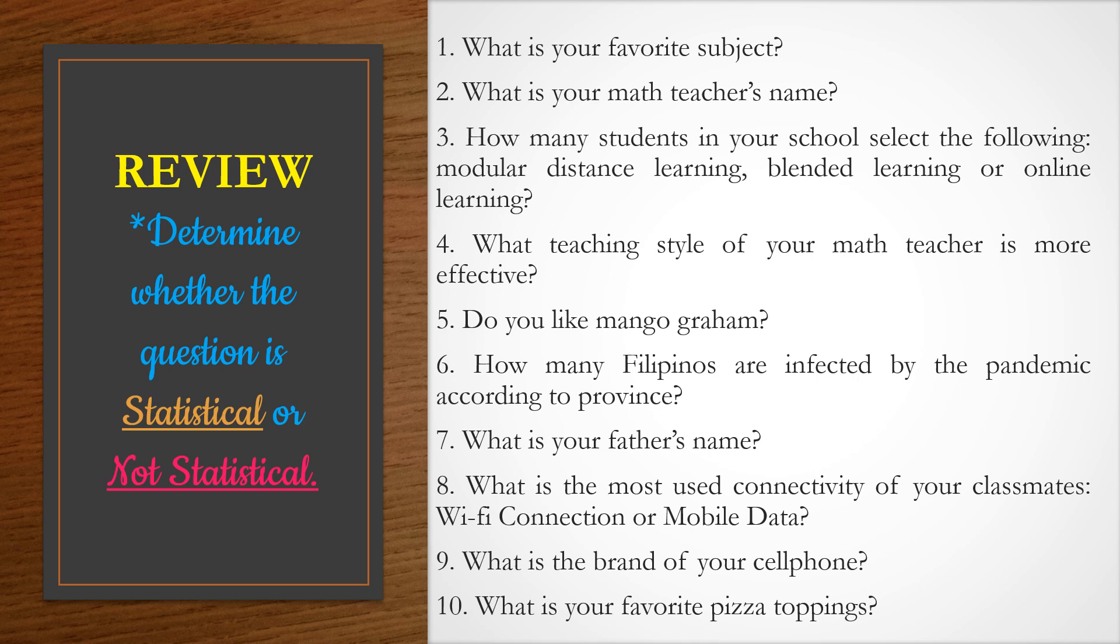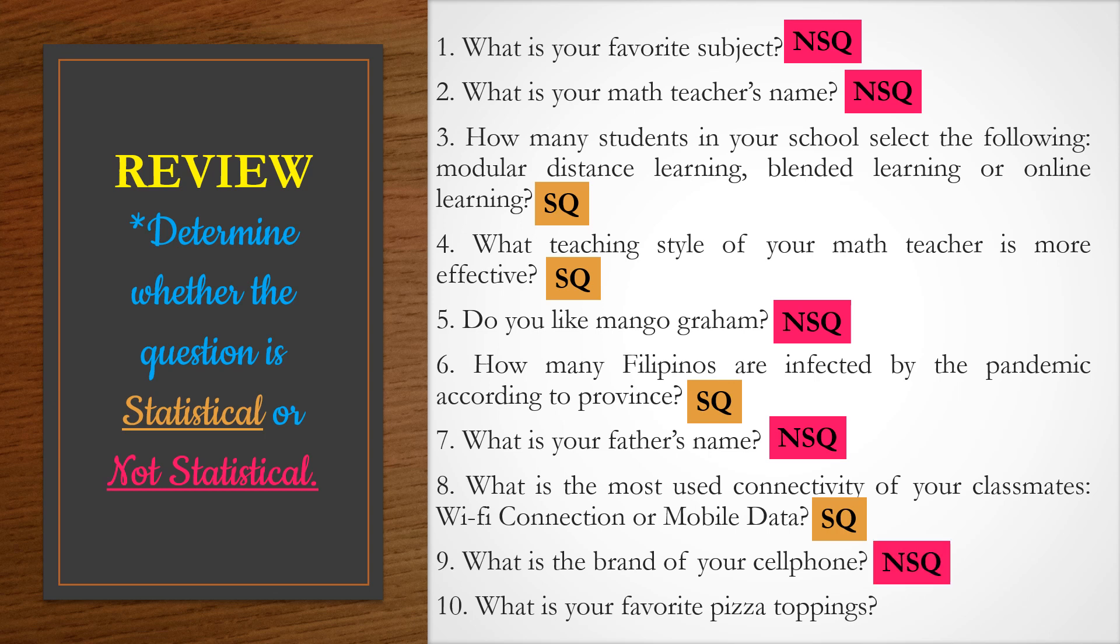And let us check. For question number one, it is not a statistical question because it has an exact answer. Number two is also not statistical. Number three is a statistical question because you have to conduct an interview or other ways of collecting data to answer the question. Number four is also statistical. Number five, not statistical. Number six is statistical. Number seven is not statistical. Number eight is statistical. Number nine not statistical and the last one is also not statistical.